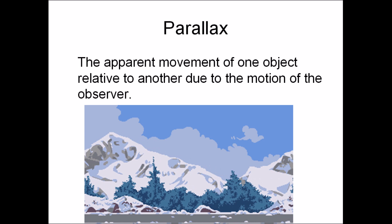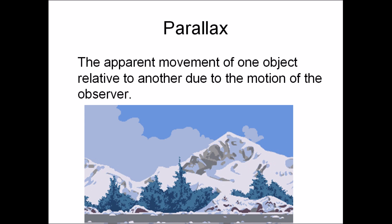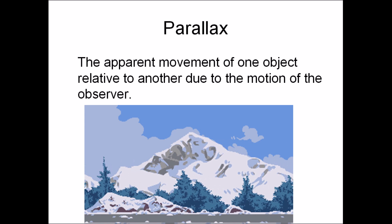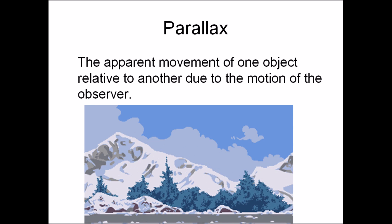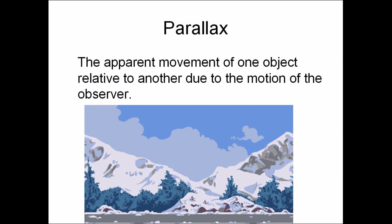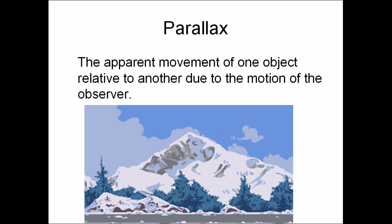Now, parallax is the apparent movement of one object relative to another due to the motion of the observer. In other words, you might notice that the objects furthest away move slower than the objects closer up when the observer is moving.